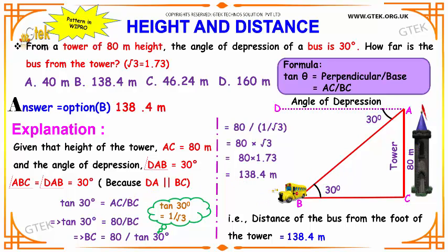Tan 30 is the trigonometric relation that connects your perpendicular with the base, because we need to find BC. Hence tan 30 is equal to AC by BC. We know that tan 30 has the value as 1 by root 3.